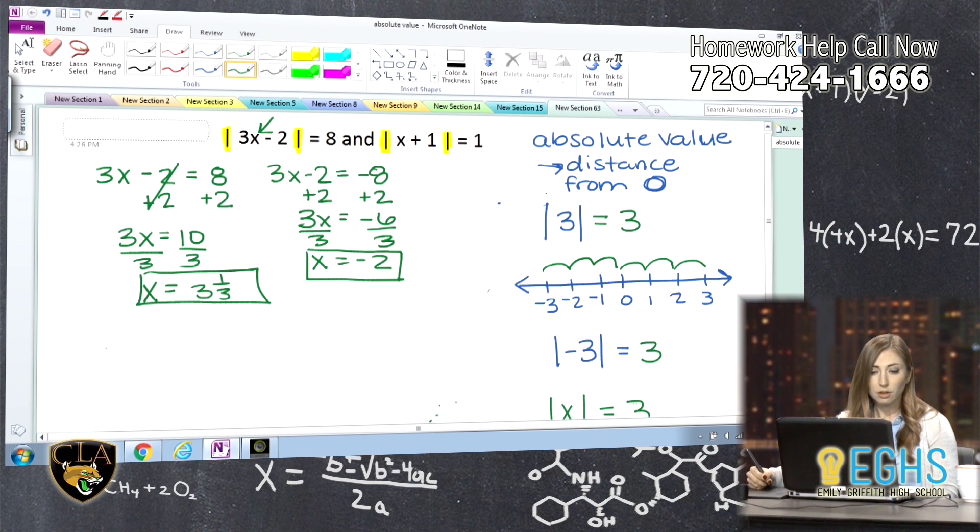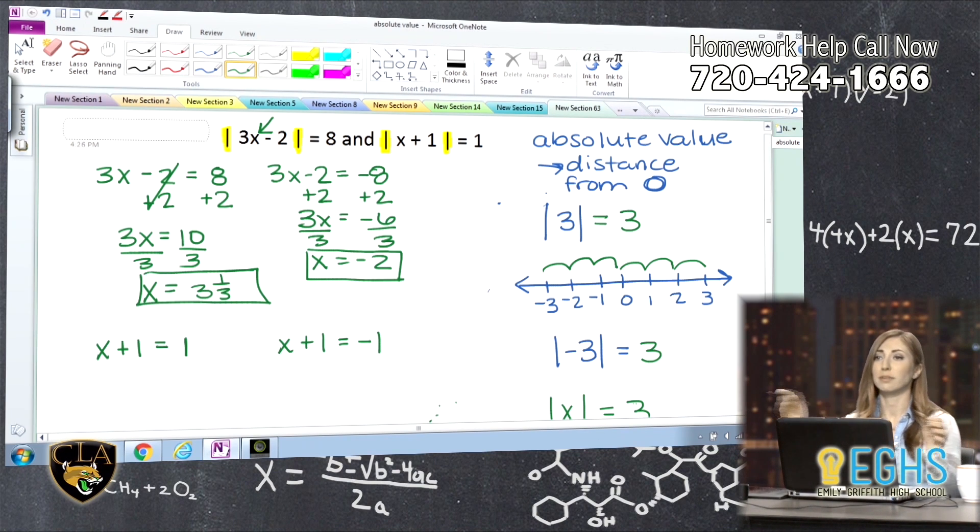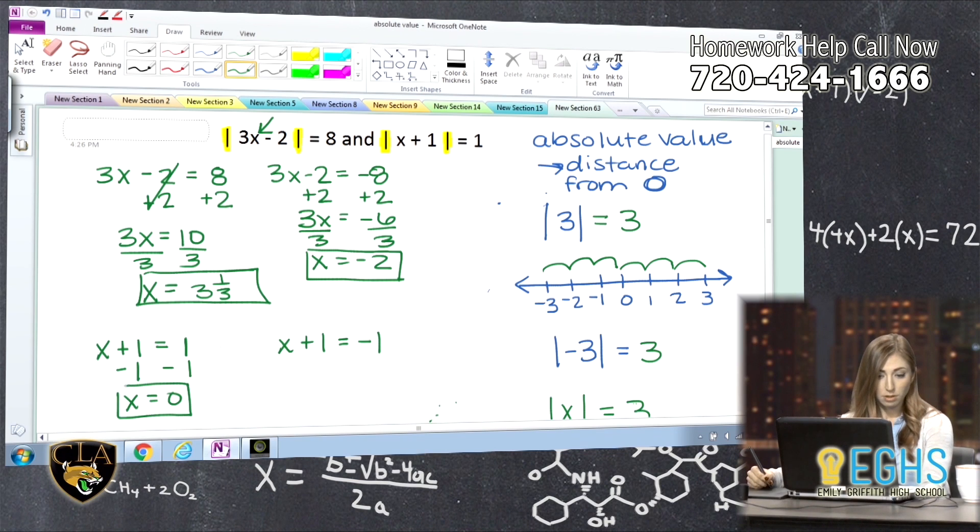We could do the same thing with this other equation, and the way that that would work is I'm going to say x plus one is going to be a distance of, or it's going to be at one, or x plus one is going to be at negative one, because again, we're talking about distance, and negative one is the same distance from zero as positive one. So solving these equations, I'm going to subtract one from both on this one, and I end up getting x is equal to zero, and then over here, subtract one on this one, and I get x is equal to negative two.